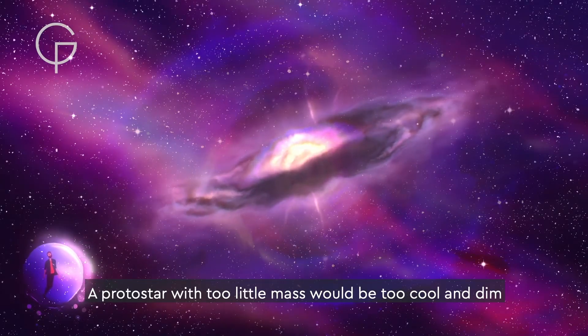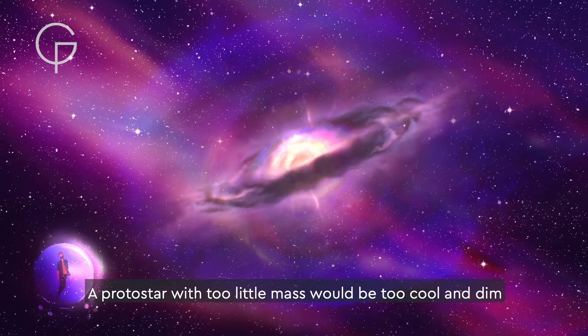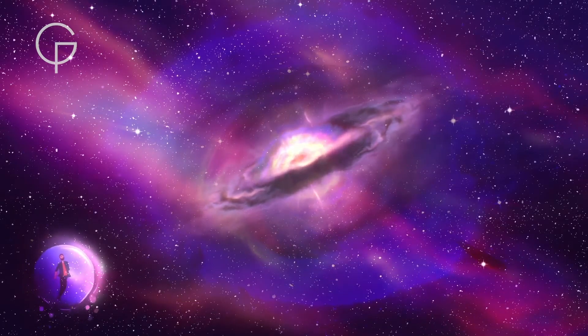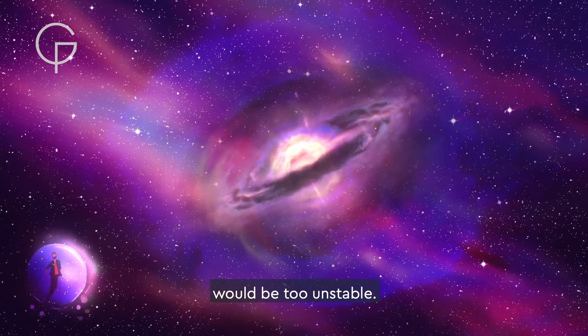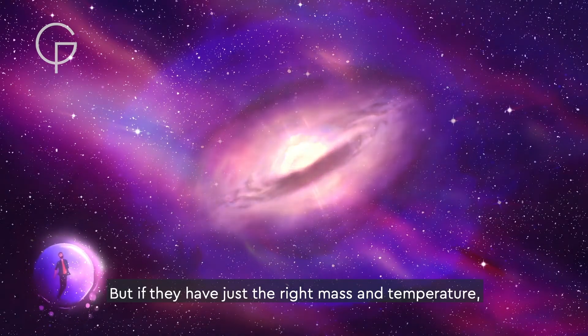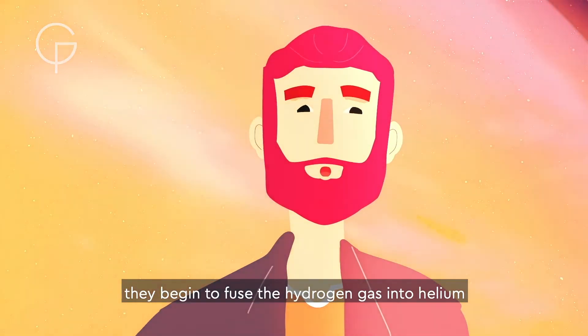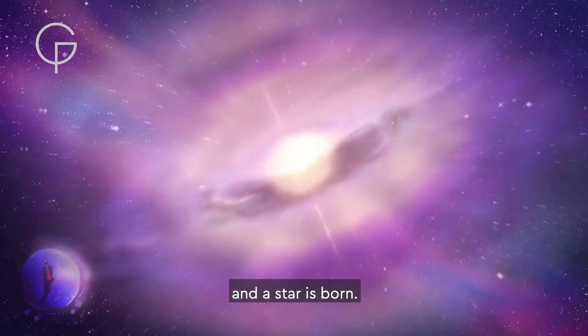A protostar with too little mass would be too cool and dim, and it will never become a star. And an excessively massive, hot and bright protostar would be too unstable. But if they have just the right mass and temperature, they begin to fuse the hydrogen gas into helium, and a star is born.